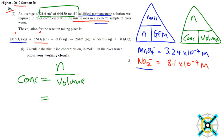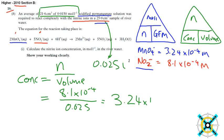And that is 8.1 times 10 to the minus 4 divided by volume, which again I've converted into liters, which is 0.025. And therefore, the concentration is 3.24 times 10 to the minus 2 moles per liter.